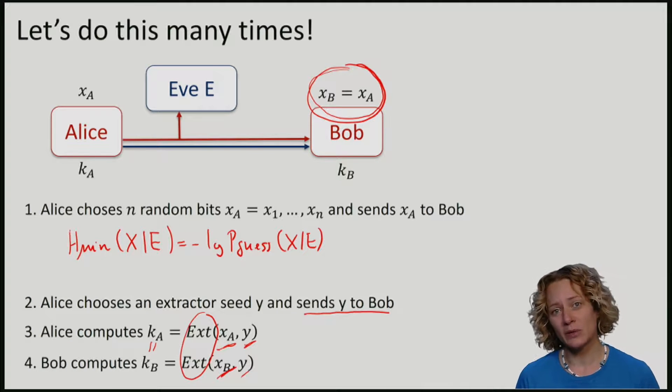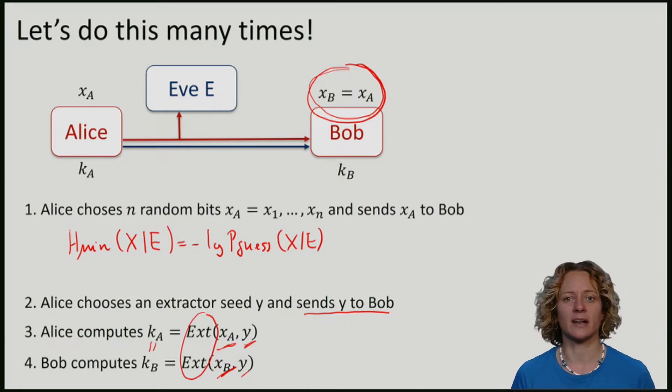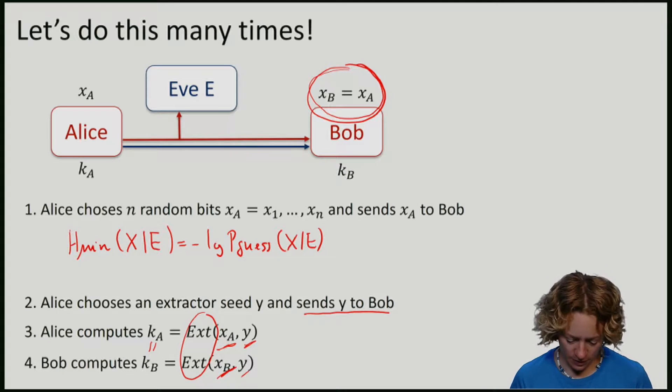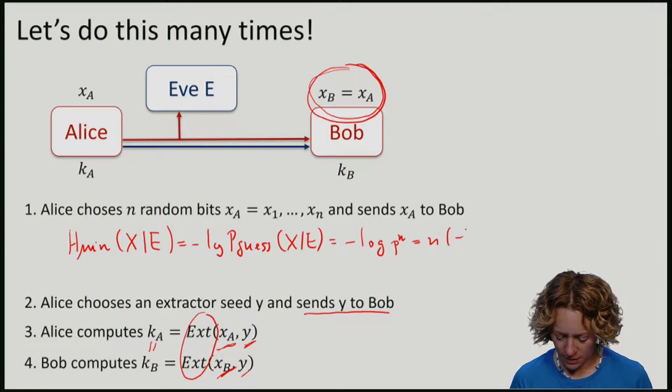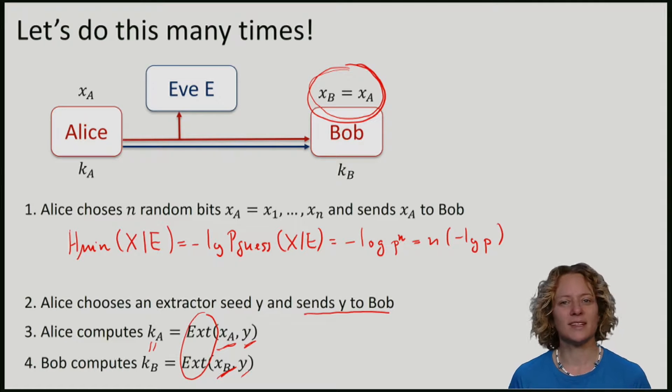We're interested in what is the probability that Eve guesses all of the bits correctly. And for our special channel, this is minus the log of p to the n, which is just n times minus the log of p. With us seeing that Eve's min entropy is just n times the min entropy that she had for one bit.